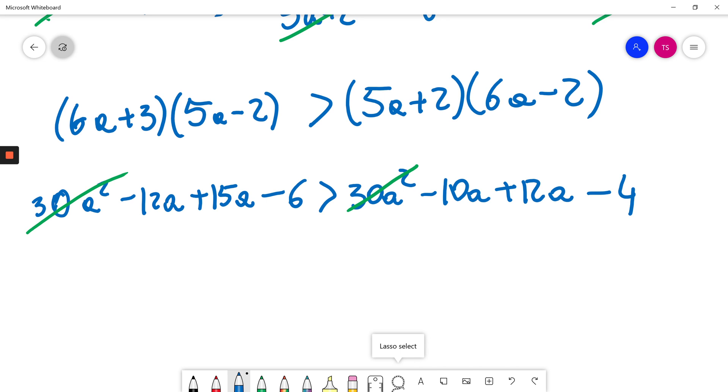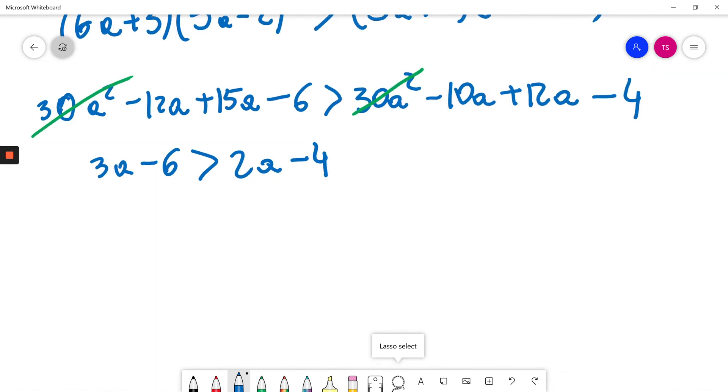And I will have... Now I will subtract 2A on both sides. Now I will plus 6 on both sides.